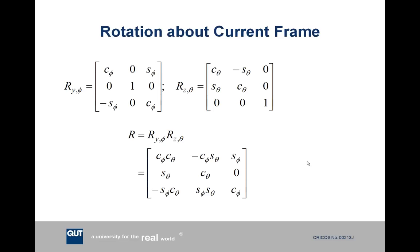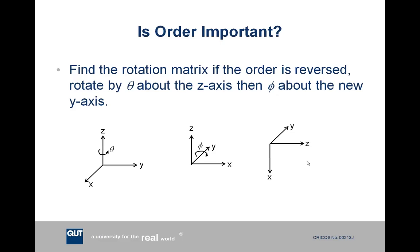We apply rotations in the order they happened and get the general rotation matrix for this set of two rotations. Now, why is order important? Why can't we just do it in any order? We'll do a simple illustration of why order is particularly important. If we were to do these two rotations but in the opposite direction, we're still doing two, but in reverse.